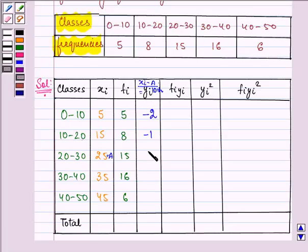So we have here minus 1, 0, 1 and 2. Now to find out fi*yi we will be multiplying these two terms and we will be getting minus 10, minus 8, 0, 16 and 12.